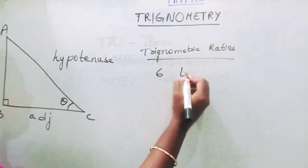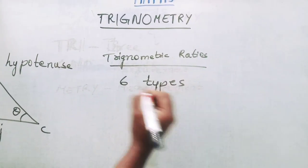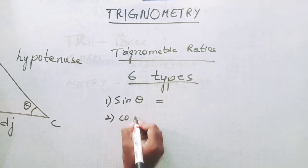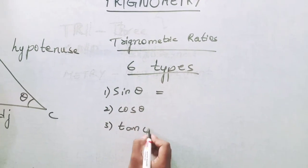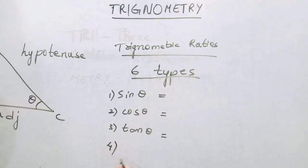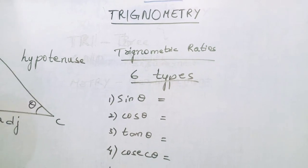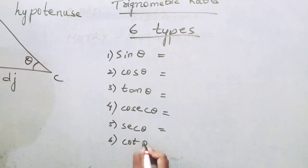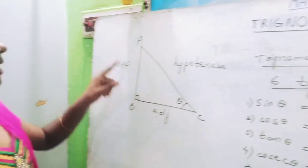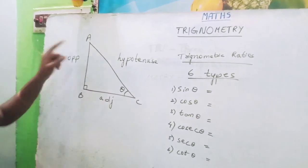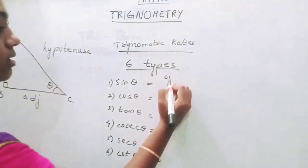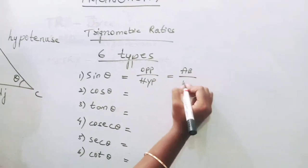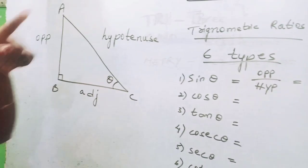Trigonometric ratios are of six types. The first one is sin theta, the second one is cos theta, the third one is tan theta, the fourth one is cosec theta, the fifth one is sec theta, and the sixth one is cot theta. Sin theta means, coming to a right angle triangle, sin theta equals opposite by hypotenuse. Let's write it as AB by AC. Cos theta means adjacent by hypotenuse.